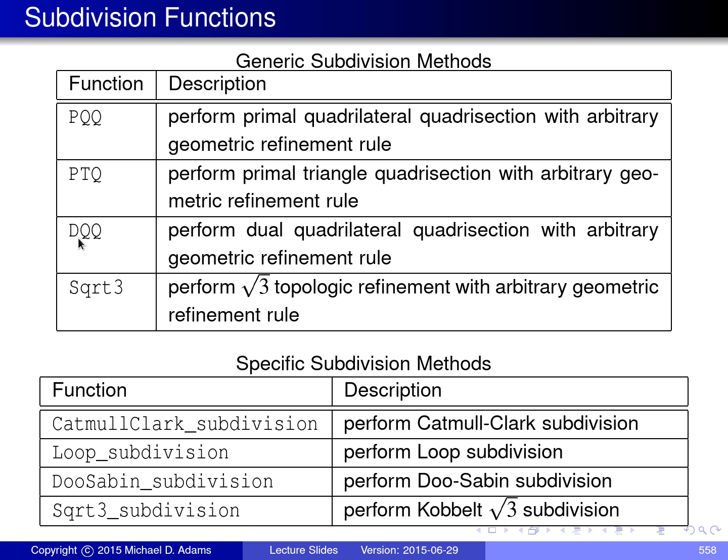In principle, the PTQ function can compute any subdivision scheme using primal triangle quadrisection for the topologic refinement rule. The next one is DQQ, which performs dual quadrilateral quadrisection for the topologic refinement rule and allows for any arbitrary geometric refinement rule to be plugged in. And lastly, we have the SQRT3 function, which performs root-3 topologic refinement and allows an arbitrary geometric refinement rule to be plugged in, enabling any subdivision scheme based on root-3 topologic refinement.